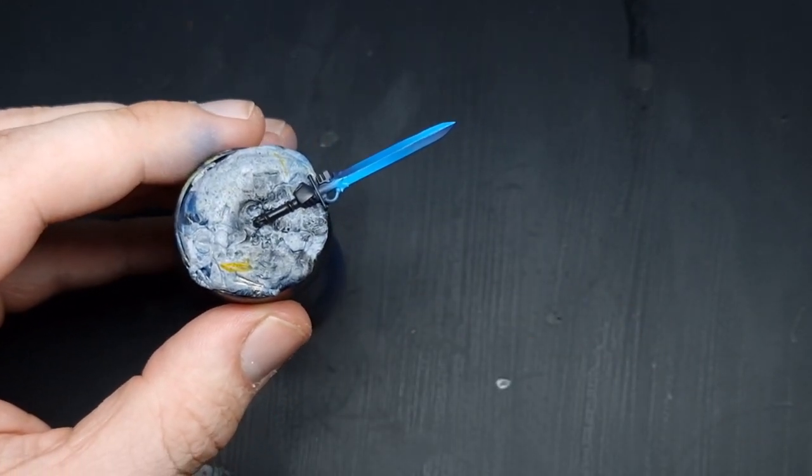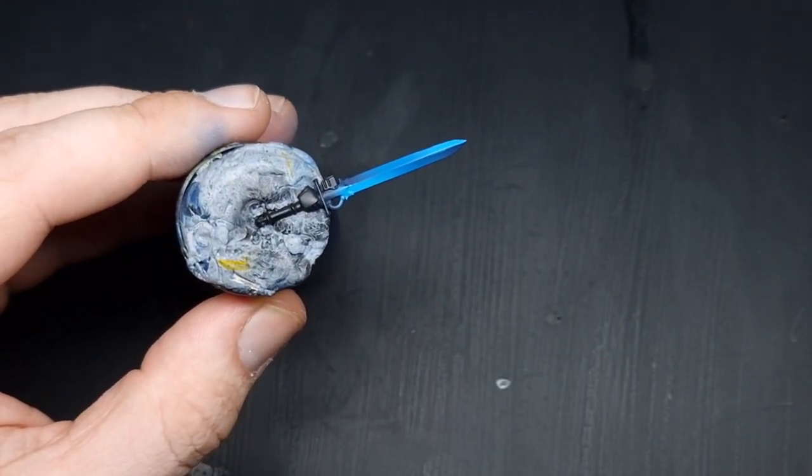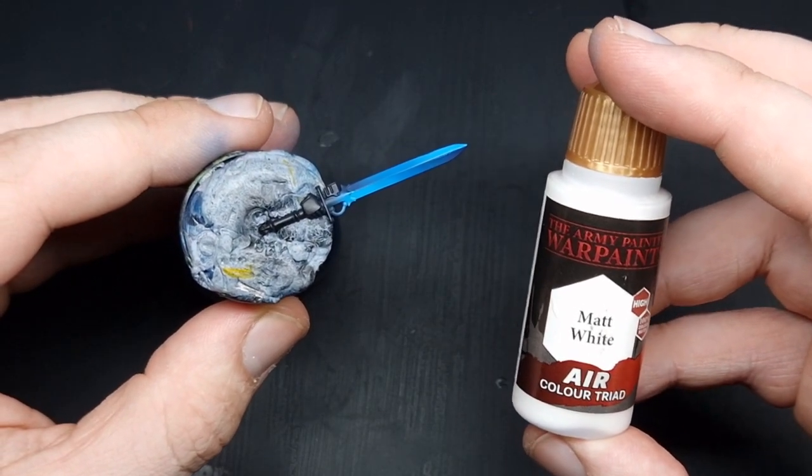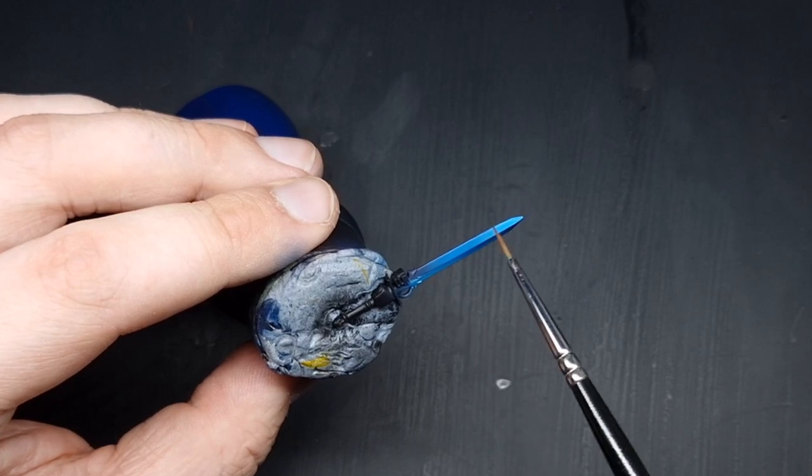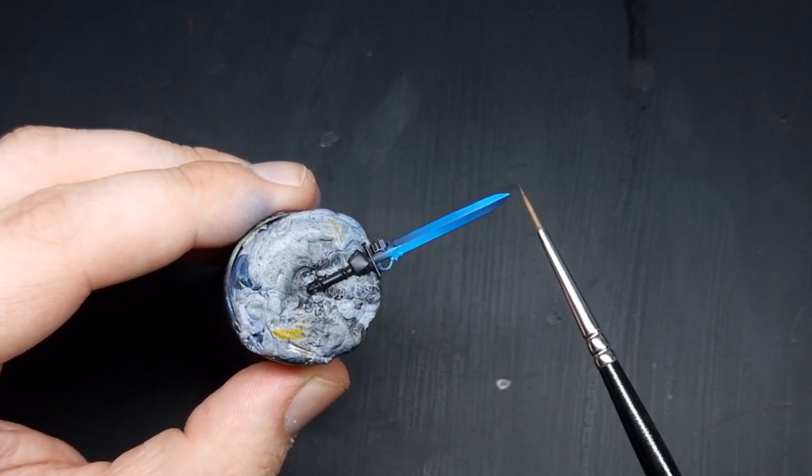So the only step left now is to give this an edge highlight. We're going to take some Matte White from The Army Painter and this is just going to be a very quick edge highlight over the entire sword and the fuller in the middle as well.